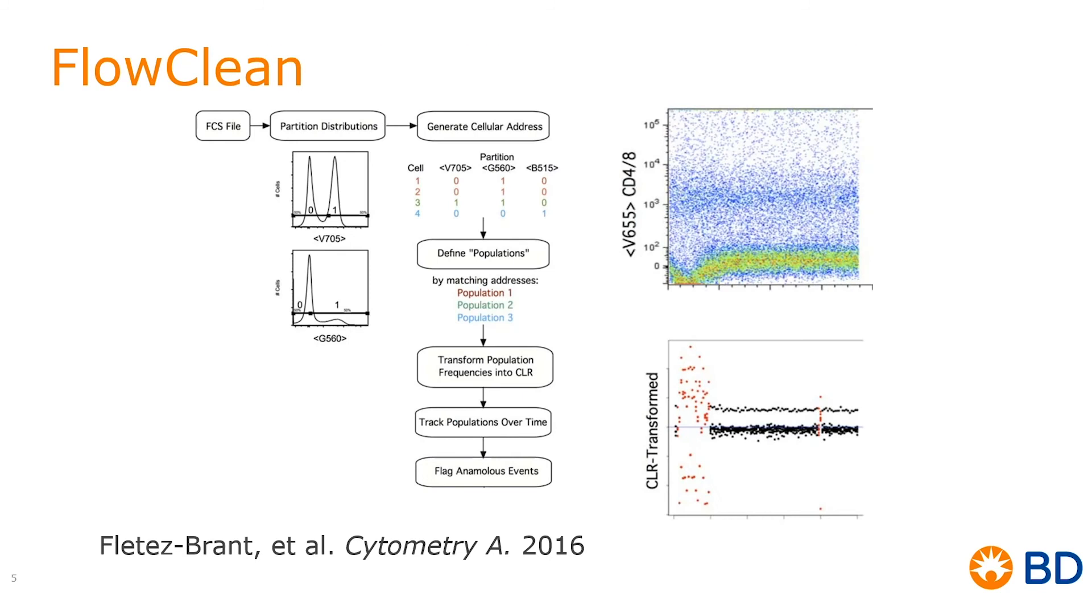Next is our plugin, FlowClean. FlowClean was previously published in 2016, and what it does, it will take your FCS file. It will then partition each of the parameters into two segments based on the medians.